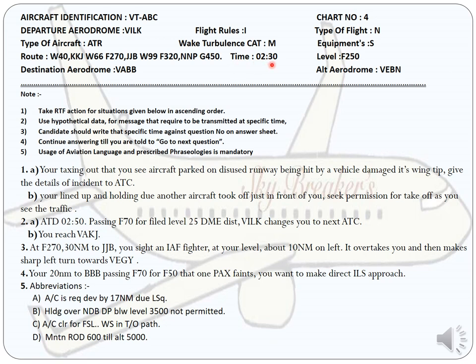Wake turbulence category is given as medium, which depends on maximum takeoff weight. The estimated block time is 0230. Very importantly, the chart number is given — chart number four — this is a hypothetical chart number you need to use for doing this question. The type of flight is non-scheduled. Equipment is standard — your aircraft must be fitted with VHF, VOR, and ILS for communication, navigation, and approach.